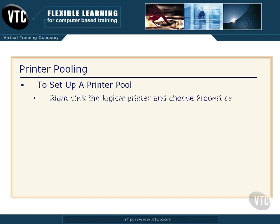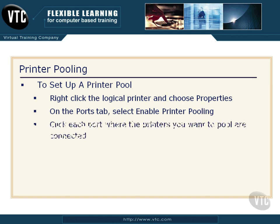To set up a printer pool, here are the steps — I'll go through these in a separate video as well. Right-click on your logical printer and choose Properties. Go to the Ports tab and select the checkbox 'Enable Printer Pooling,' then click each port where the printers you want to pool are connected. This assumes you've already added your printers and set the ports, and they will show up in the list so you can choose which ones to add to the printer pool.